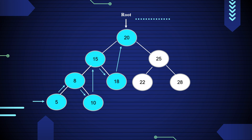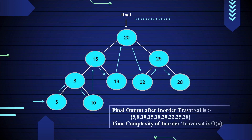22 has no child, so print 22 and move to its root node. Now print 25 and move to the right subtree of 25, that is 28. Now print 28.